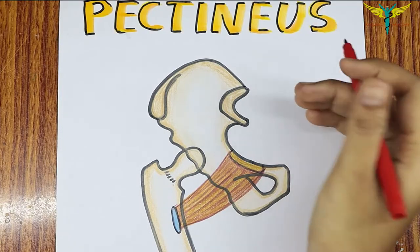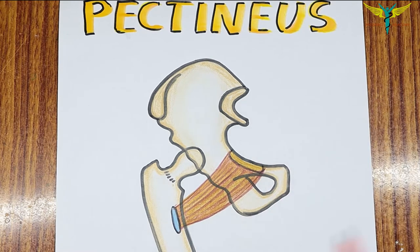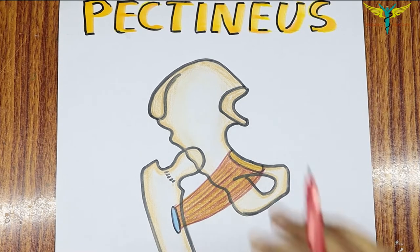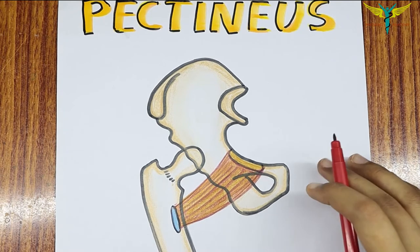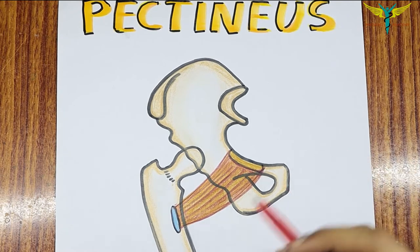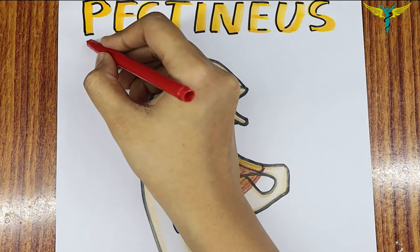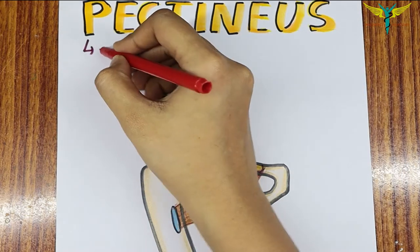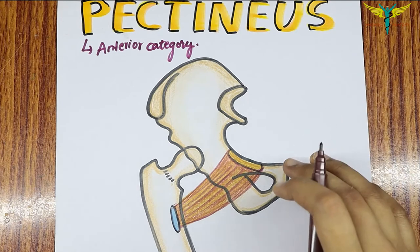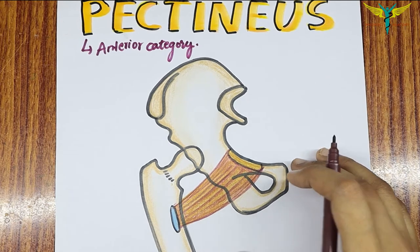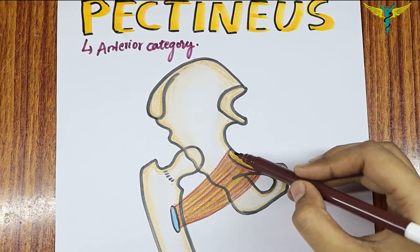The pectineus is a muscle of the medial compartment of the thigh. The muscles of the medial compartment are further divided into anterior, middle, and posterior divisions, in which the pectineus falls in the anterior category. The pectineus is a flat, quadrilateral muscle which lies in the floor of the femoral triangle.